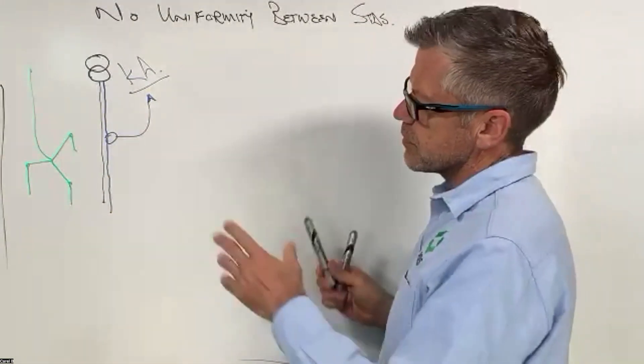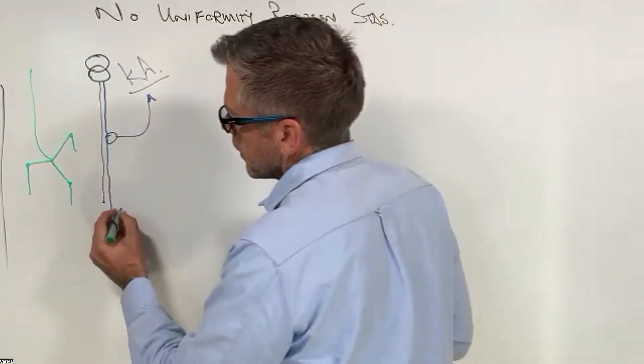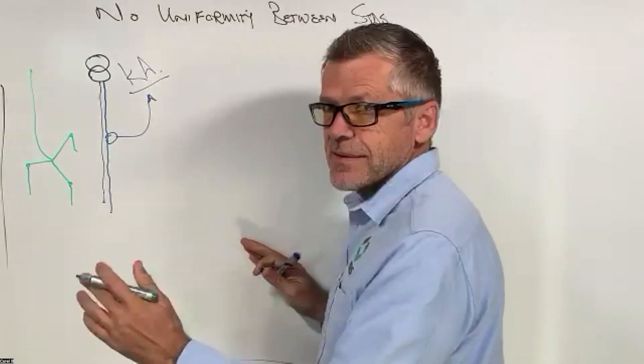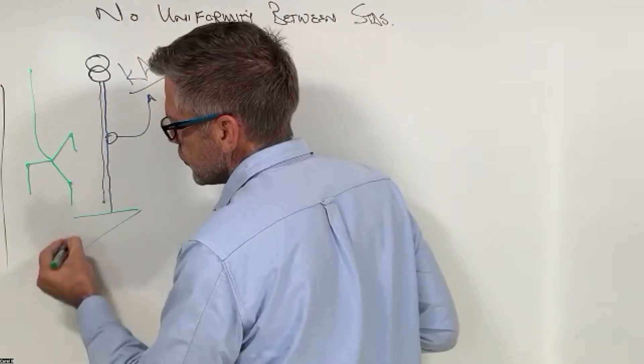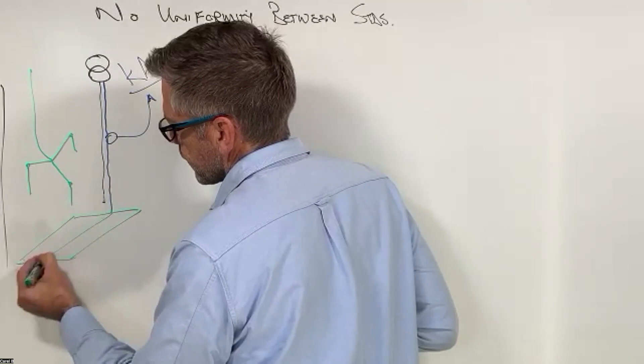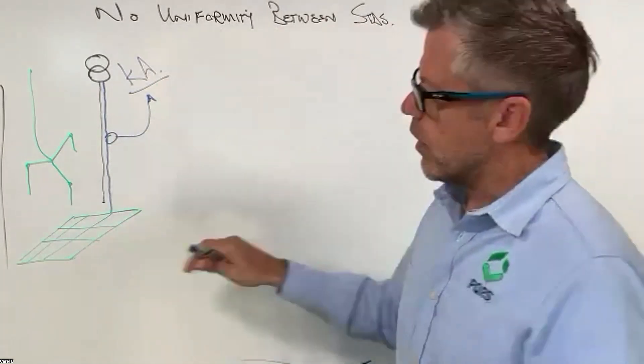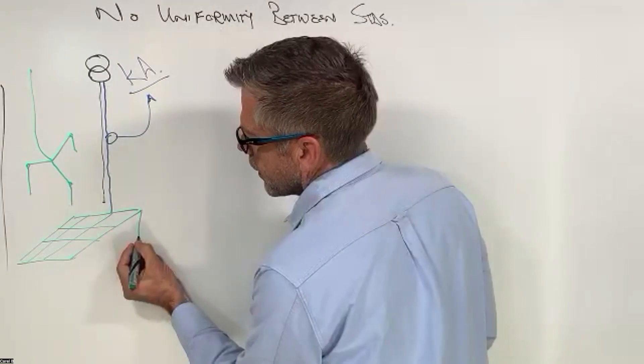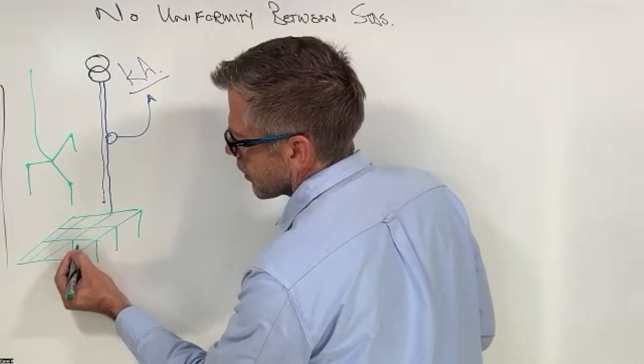But an earth mat is an arrangement. It's usually a grid, usually a grid of copper wire, and at each one of these points you have an earth spike going into the ground.